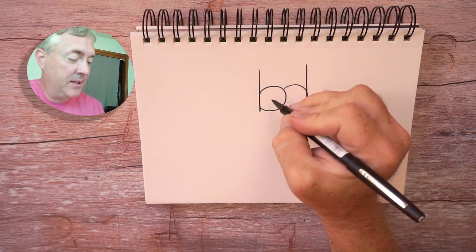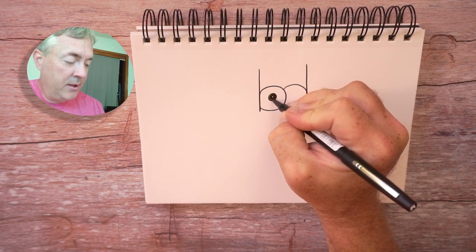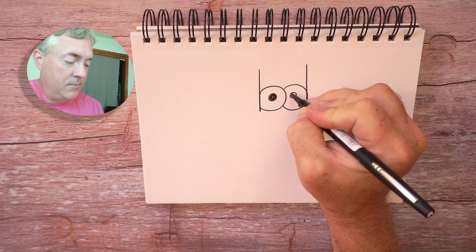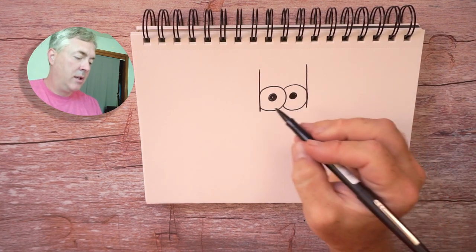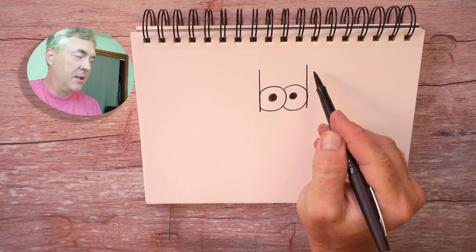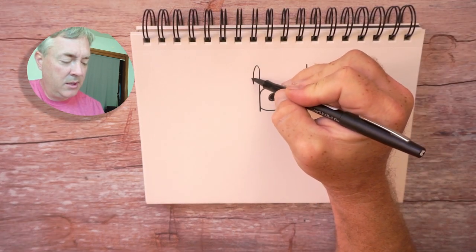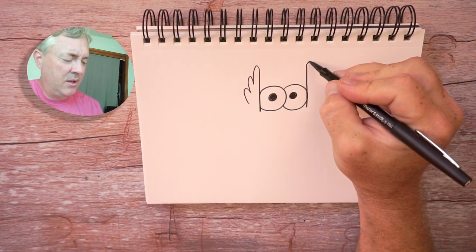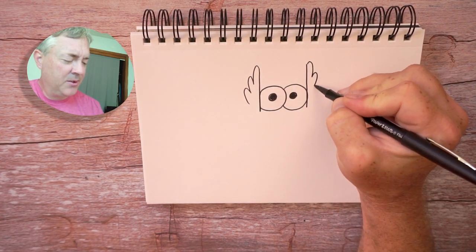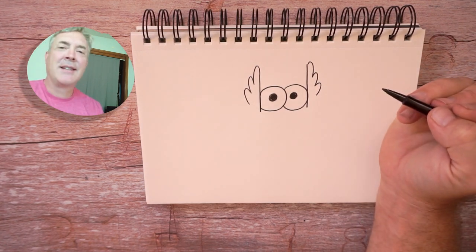We're going to turn these into the eyes, so we'll draw the pupils right here. And then these sections we're going to turn into the very feathery tufts for the top. They're actually not ears, but they look like ears. Excellent.